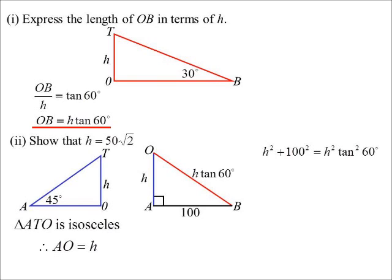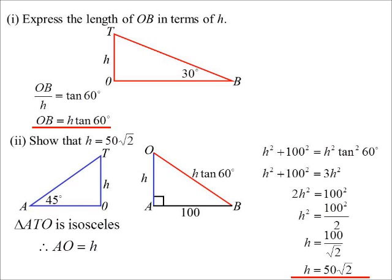Pythagoras. So H squared plus 100 squared is H squared tan 60, or tan squared 60. Rearranging all this, eventually, we'll make H the subject. And there's the exact value, 100 over root 2. It's said to show it was 50 root 2.